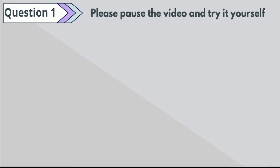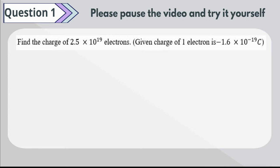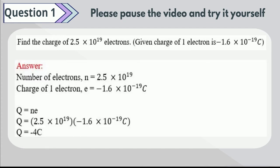Question 1. Find the charge of 2.5 times 10 to the 19 electrons, given that the charge of one electron is negative 1.6 times 10 to the negative 19 coulombs. Please pause the video and try it yourself. From the given information, we calculate the charge is equal to negative 4 coulombs.